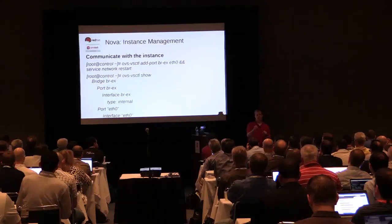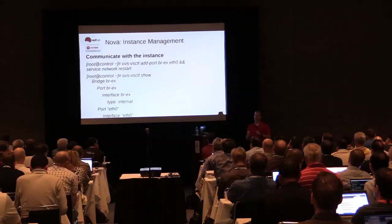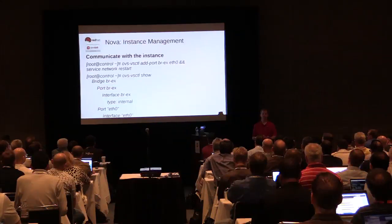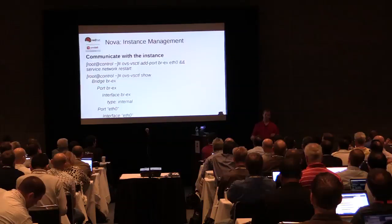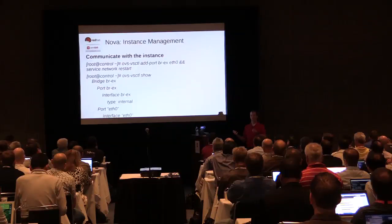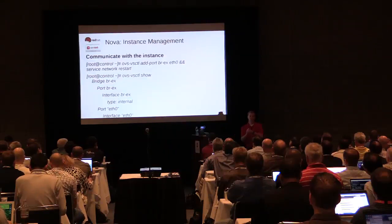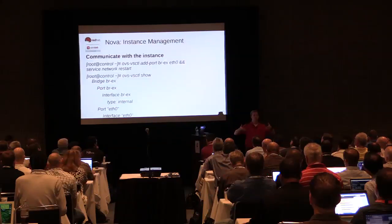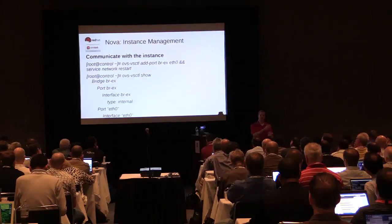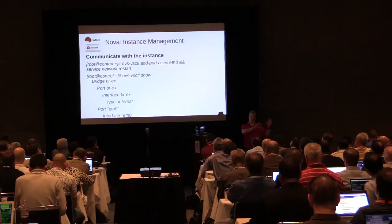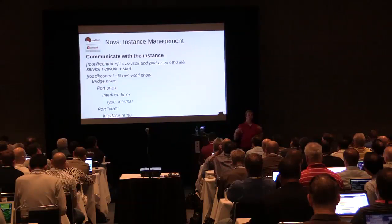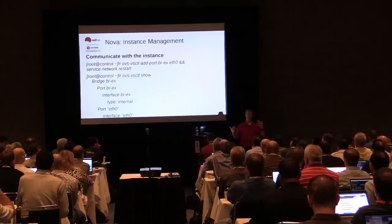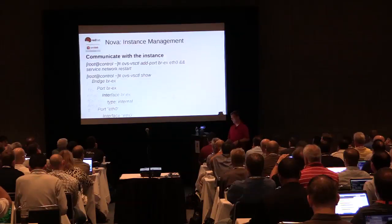When OVS gets eth0 plugged in as a port, OVS takes control of that device and we lose connectivity on it. That's why packstack can't set this up — packstack runs over SSH and has an active puppet session, so breaking that SSH connection would kill packstack. We're doing this afterwards. When I lose connectivity, my port will already be plugged into Open vSwitch because I've completed the add-port command, then bouncing the network services moves the IP from eth0 onto bridge-external.